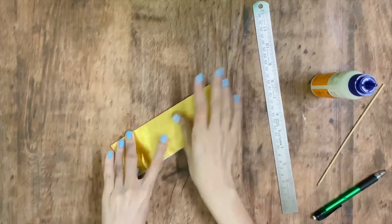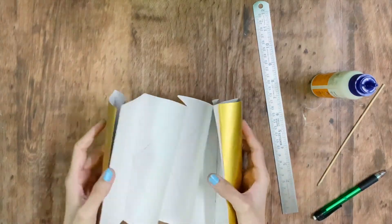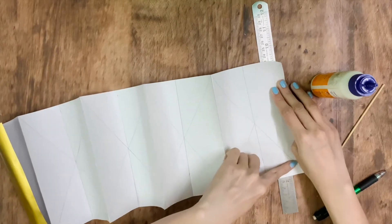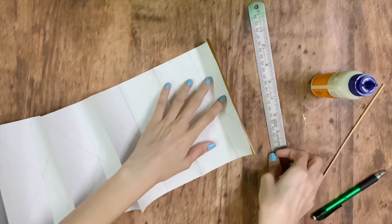You'll now see the paper forms an accordion-like shape. Again, open it up and score all the slant lines.